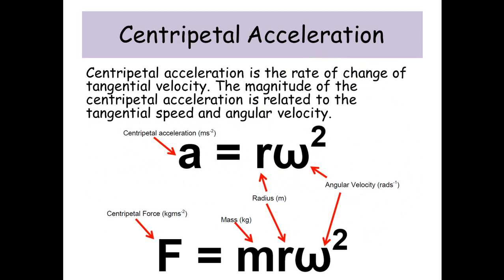Centripetal acceleration is the rate of change of tangential velocity. The magnitude of the centripetal acceleration is related to the tangential speed and the angular velocity. The first equation is a equals r omega squared, where a is the centripetal acceleration in meters per second squared, r is the radius of the circle, and omega squared is in radians per second. And because f equals ma, I can substitute a for r omega squared and get f equals mr omega squared.